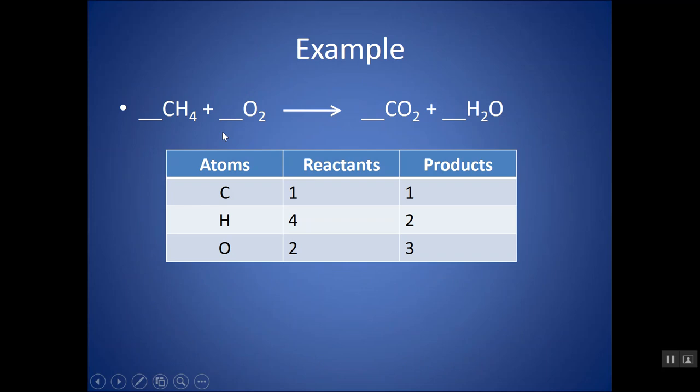So here's an example. Start by balancing something that is in only one thing on the left and one thing on the right. If you look here, there's oxygen here, here, and here. So I want to leave oxygen to the end. Whenever you're balancing a combustion reaction, which is what this is, you want to leave oxygen to the end.